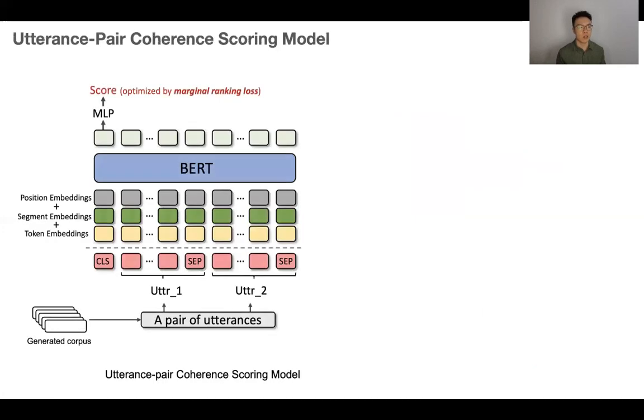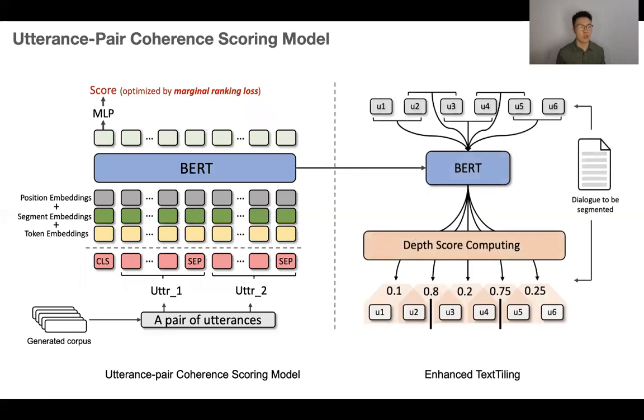With our generated utterance pair ordering dataset, we fine-tune the BERT for next sentence prediction to predict the coherent score of input pair with marginal ranking loss. The fine-tuned model is further used to measure the coherence of consecutive utterance pairs throughout a dialogue document. Then we follow the text-tiling process to segment this dialogue into topic-coherent pieces.